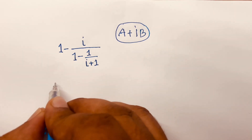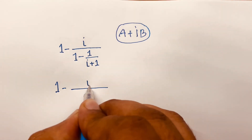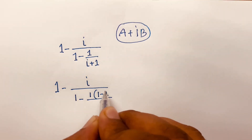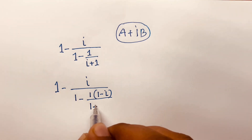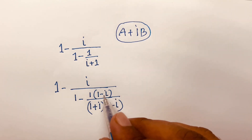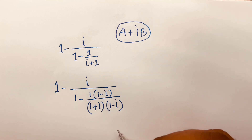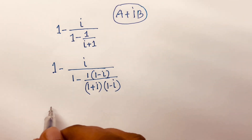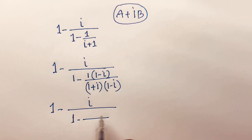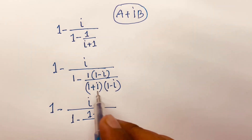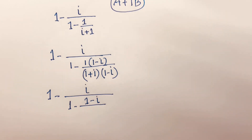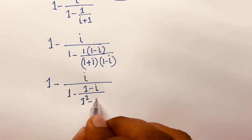So first of all, I can say it will be (1 minus i) over (1 plus i), times (1 minus i) over (1 minus i). I multiply numerator and denominator by (1 minus i). Then it will be (1 minus i) over (1 plus i)(1 minus i). It will be a plus b times a minus b, which we know equals a squared minus b squared. So I can say here is 1 squared minus i squared.